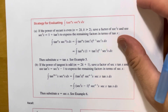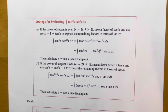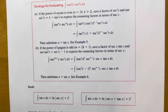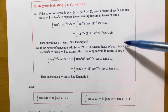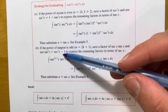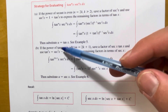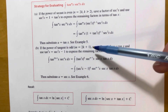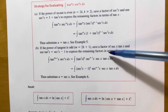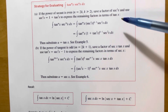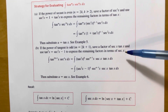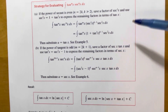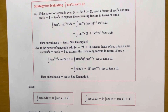Part B: if the power of your tangent function is an odd number, save one factor of secant times tangent, then use the identity tangent squared equals secant squared minus 1 to express the remaining factors in terms of secant. The purpose of saving these factors — secant squared in case A, and secant tangent in case B — is because those will be the du you need when you make a u-substitution.